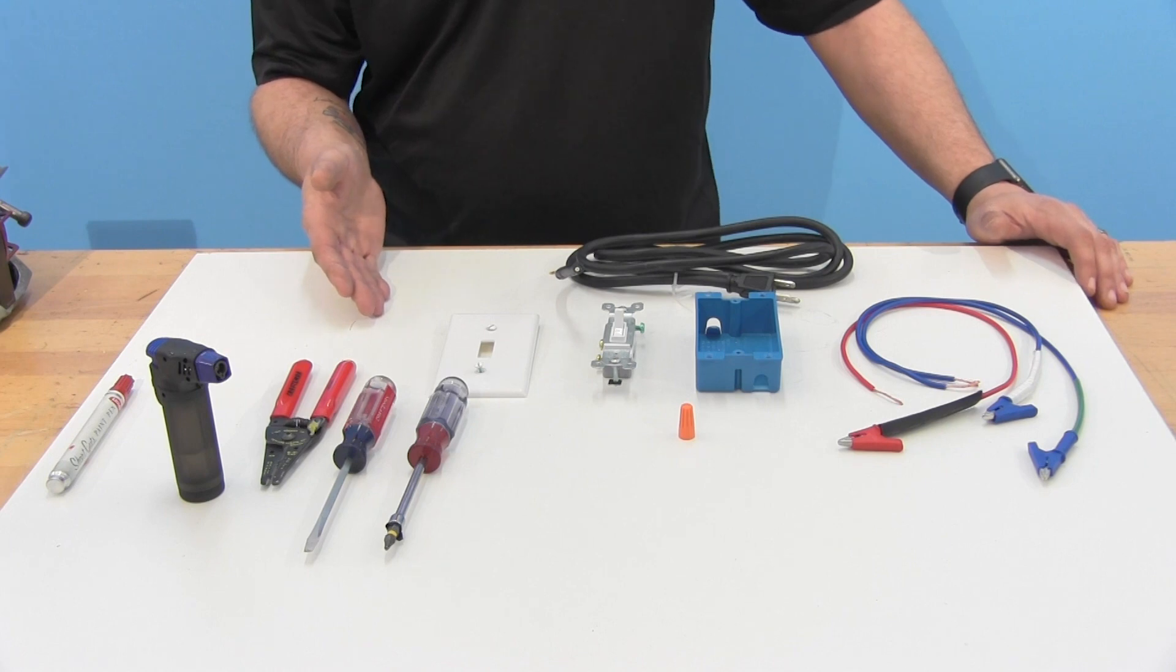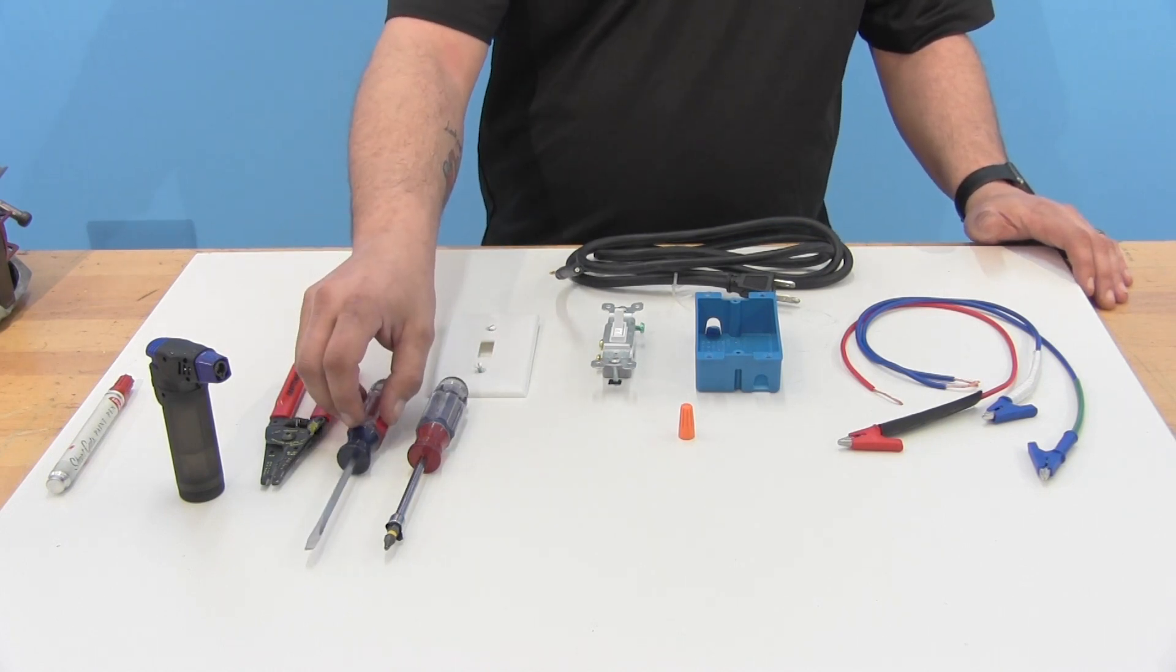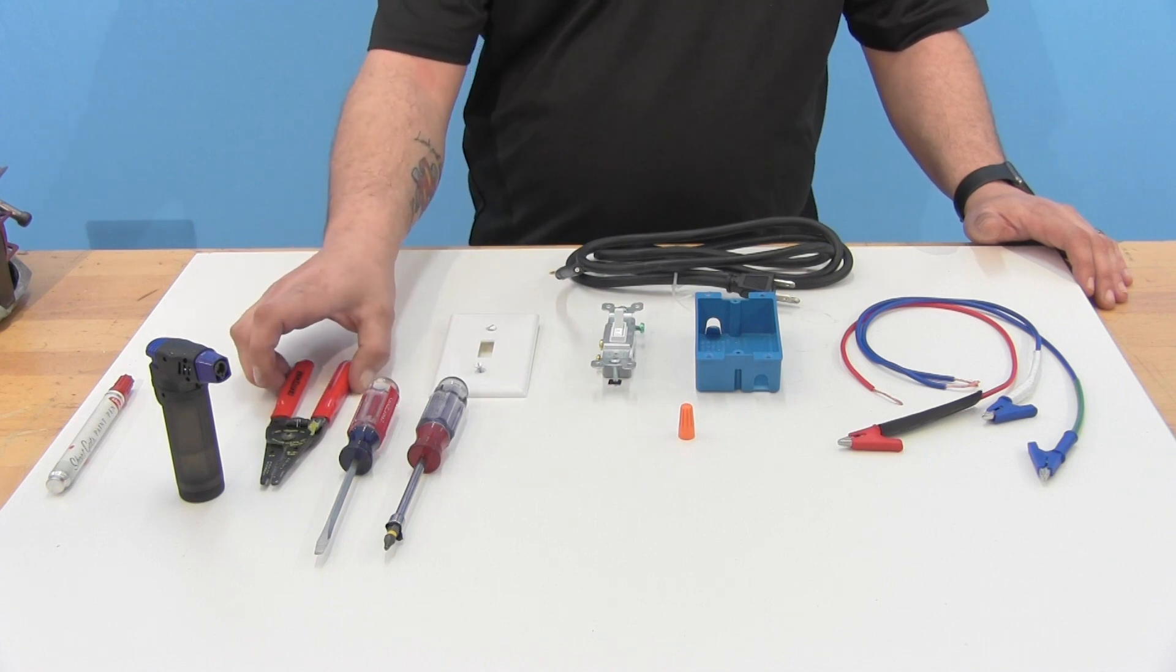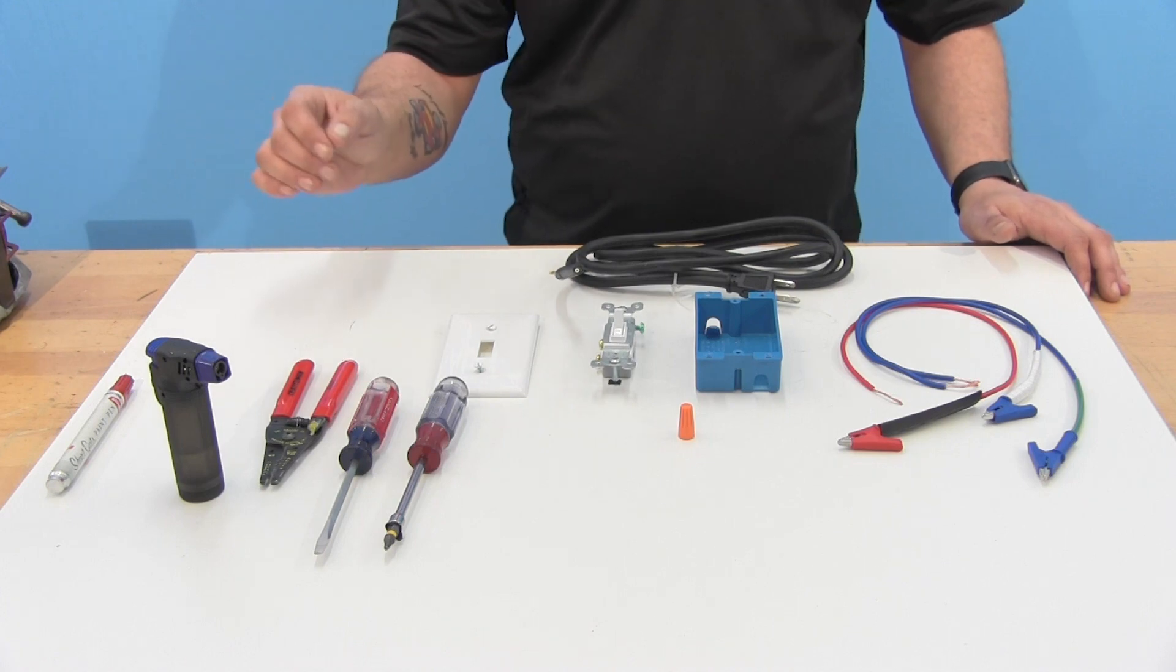Tools required for this will be a number one square bit or Phillips screwdriver, flat blade screwdriver, a pair of wire strippers, and a heat source, which we're going to use a butane small torch.